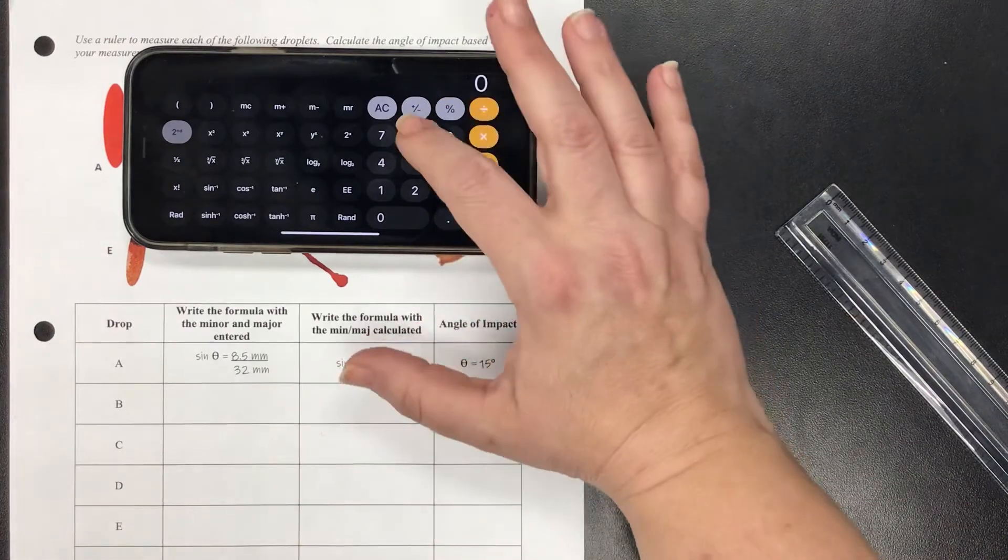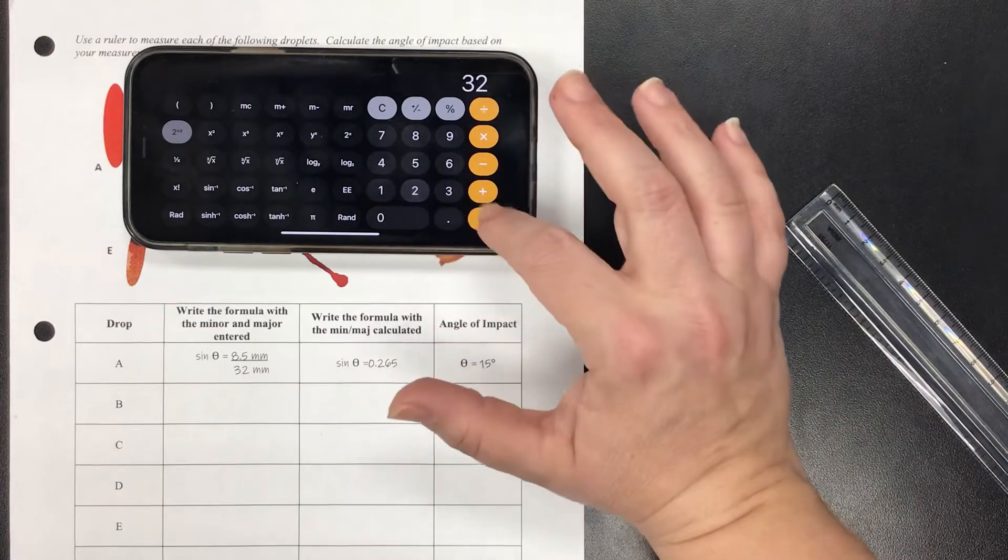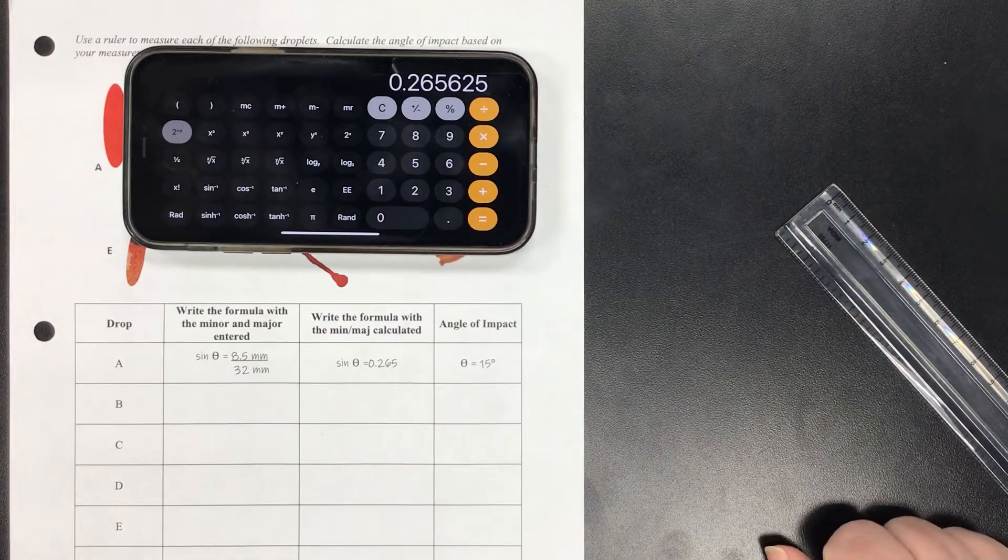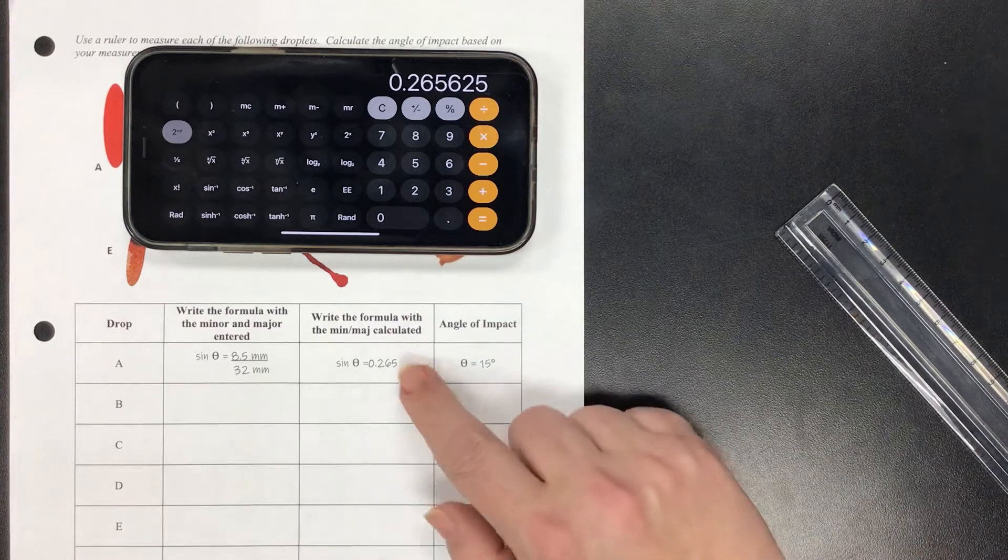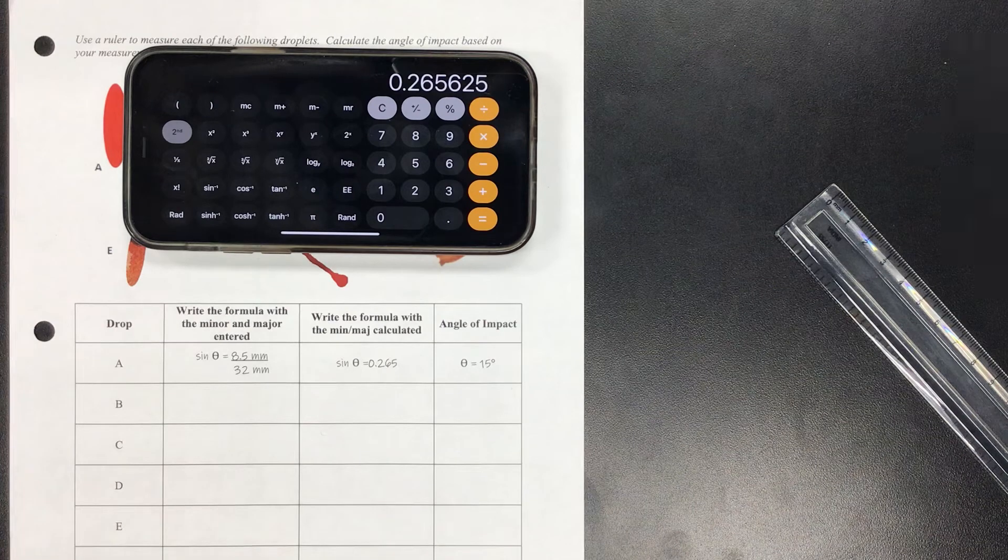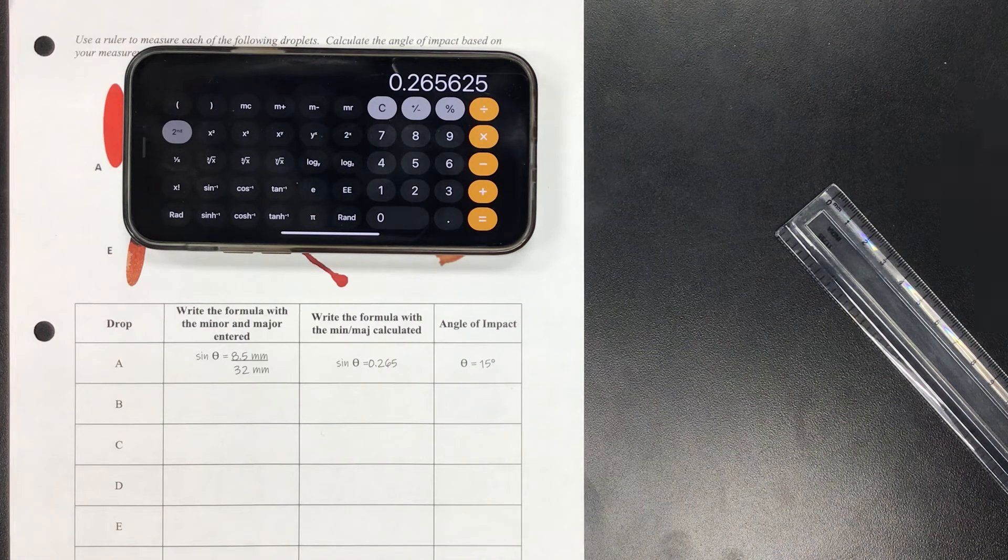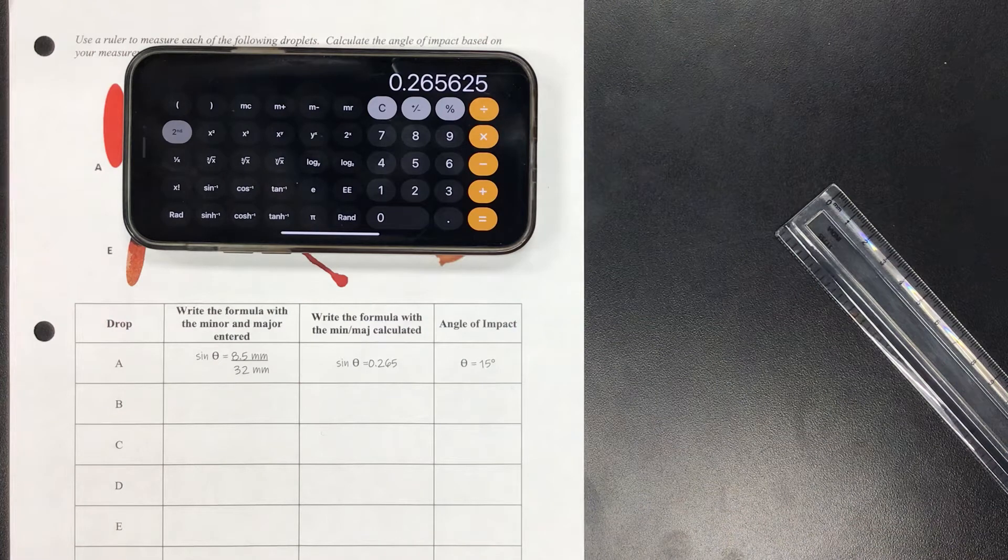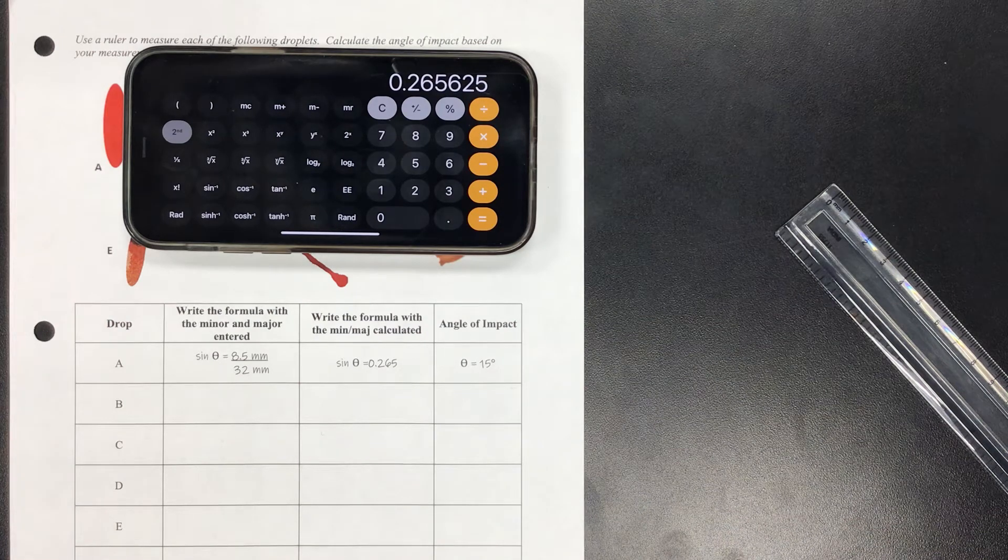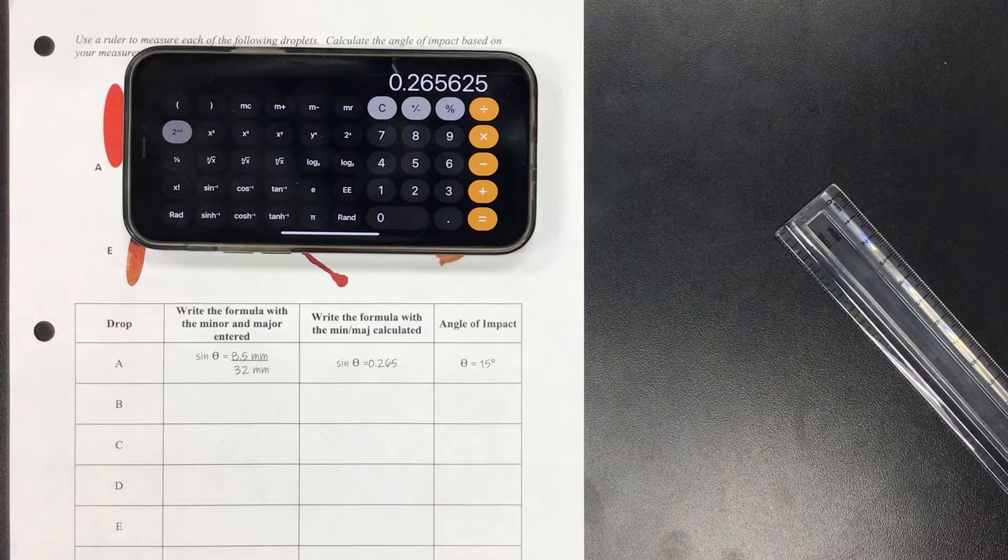And then when I do the math I'm just going to do 8.5 divided by 32 equals, and that's going to give me 0.265625. When I wrote it down on my paper I went ahead and rounded - I actually truncated - and I cut it off and that's fine. But I'm going to leave the whole thing in my calculator so that the calculator will do some of the work for me. I've got enough down there that I can figure out later if something goes wrong.